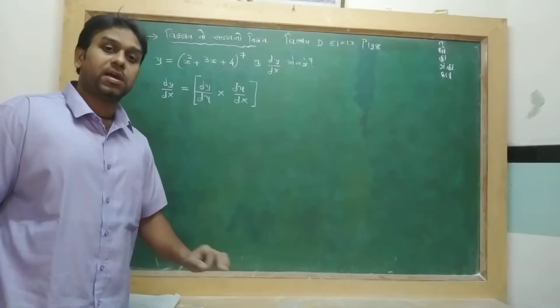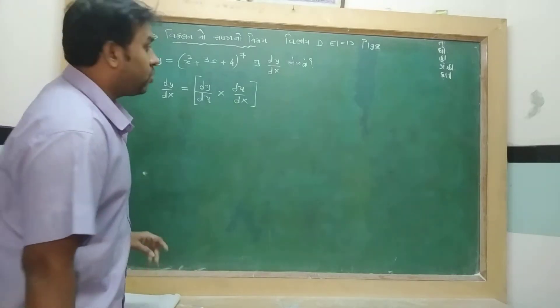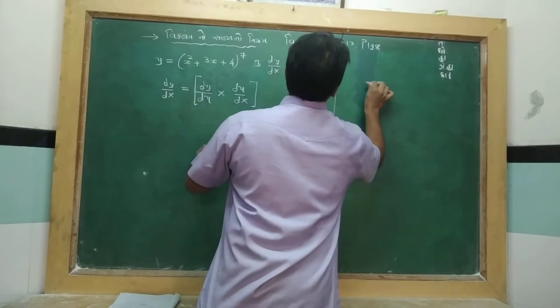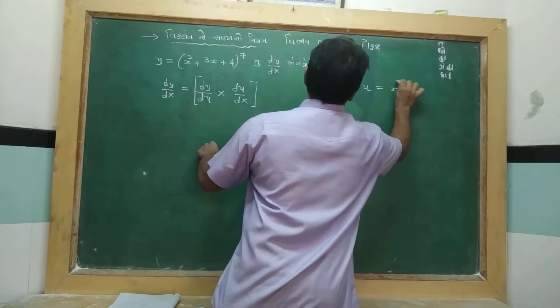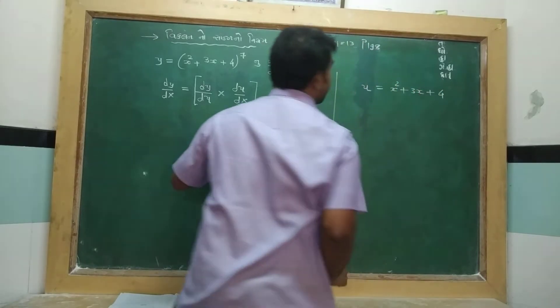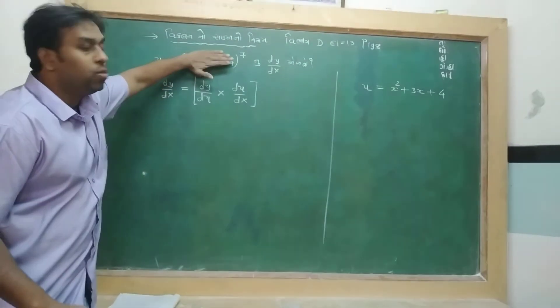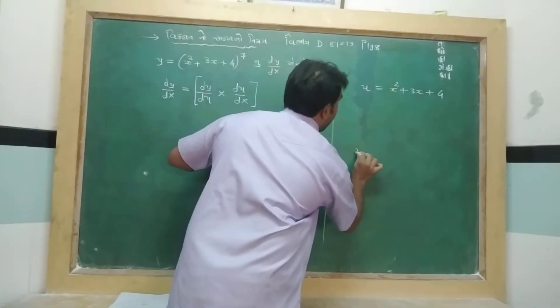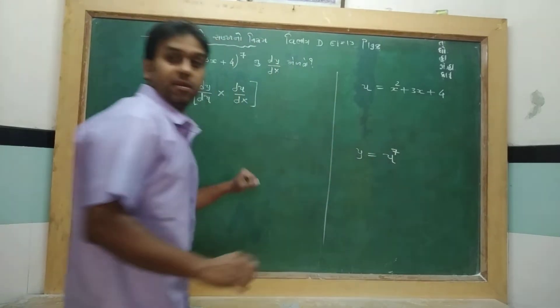u is equal to, y is equal to u, where u equals x squared plus 3x plus 4. So if you look at the brackets, the brackets will be u. So you can see y is equal to u and then u is equal to x squared plus 3x plus 4.